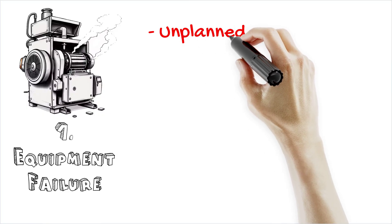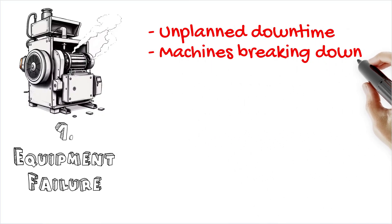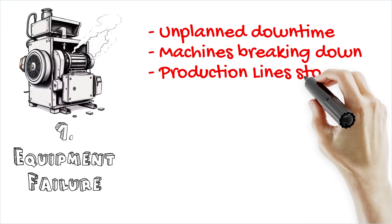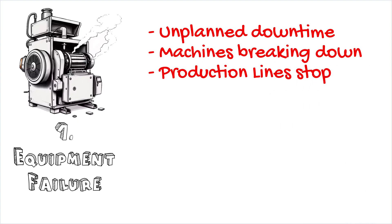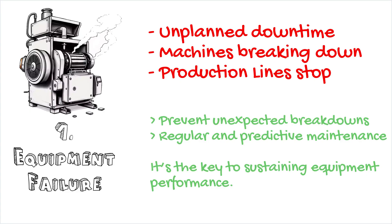The first of these losses is equipment failure. Think unplanned downtime — machines breaking down, lines stopping. These can bring production to a grinding halt. Regular maintenance and utilizing predictive maintenance tools can help alleviate this issue by preventing unexpected breakdowns.